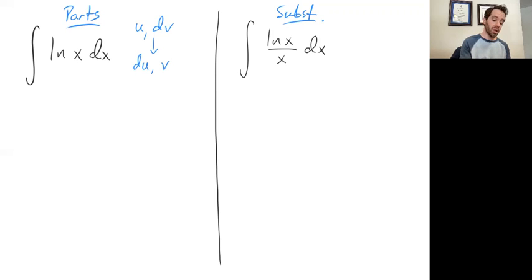Substitution says you pick a u, use that to generate a du, and then the integrand, the thing you're taking the integral of, should consist of a u and a du, maybe with some constant multiples of those. But if the method is successful, you can construct the integrand completely out of the u and the du.